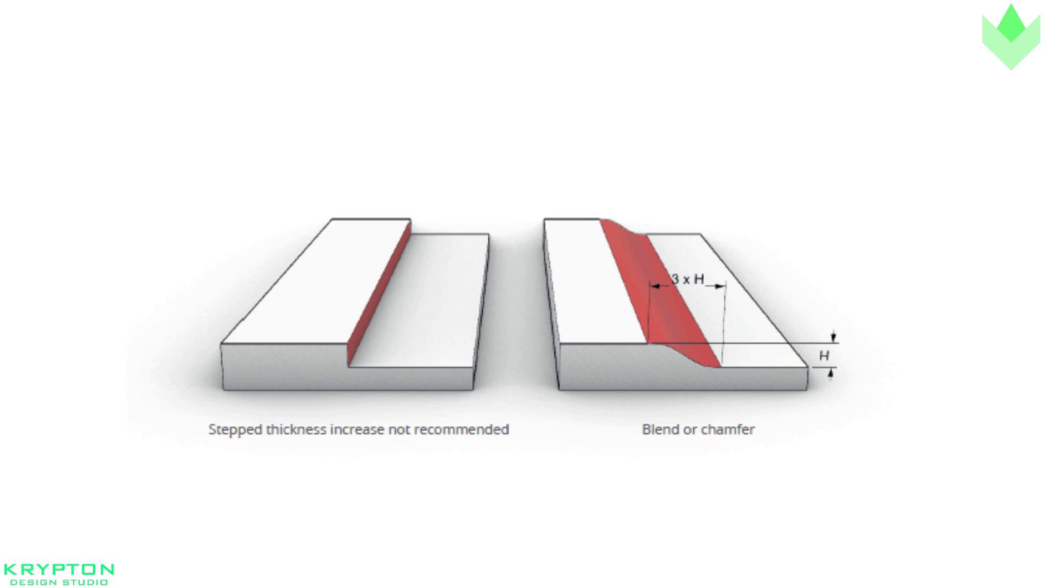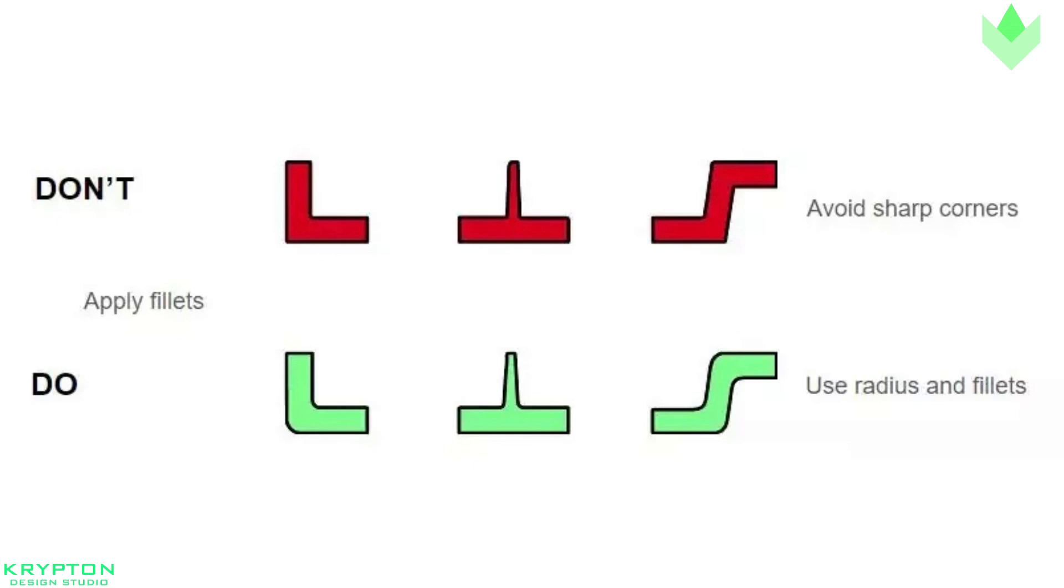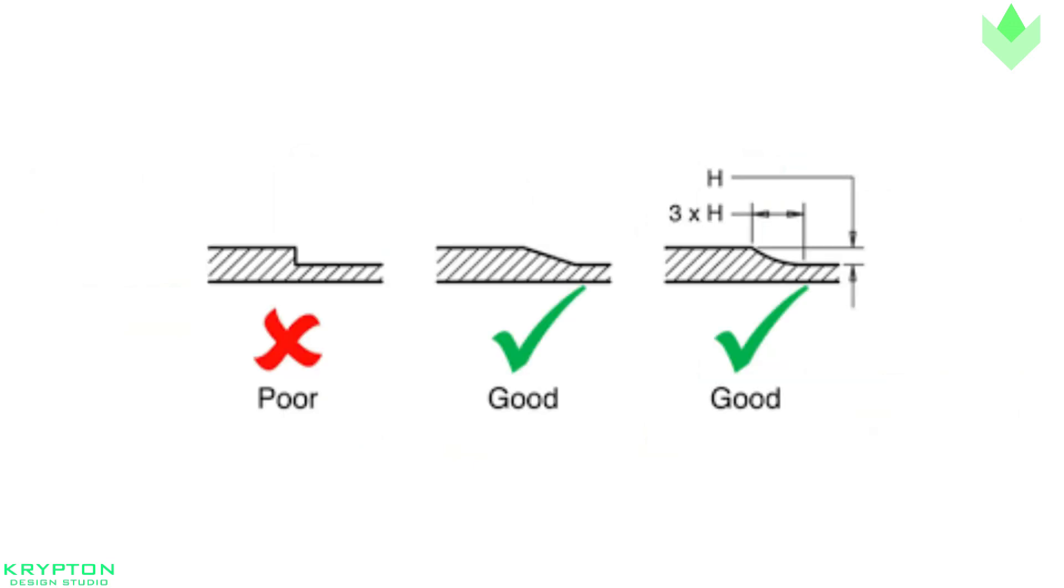At the very least, try not to make transition between thicker and thinner sections too abrupt. Try using gradual transitions or chamfered corners to minimize the dramatic change in pressure inside the mold.